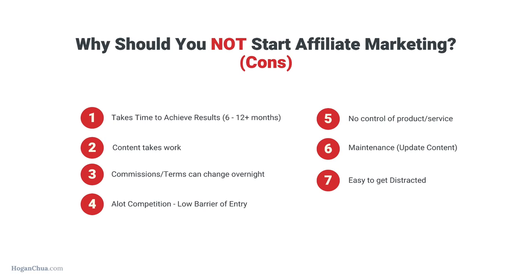Number three: commissions and terms can change overnight. A few months ago Amazon actually changed their terms and the commission rates were severely reduced. It's really important to be very selective with the types of products and affiliate programs you sign up with. Once you become successful, start promoting more products to mitigate that risk. Number four: there's quite a lot of competition due to the low barrier of entry — it's pretty much free to start. But there's no reason why you can't be the best and it's definitely not too late.